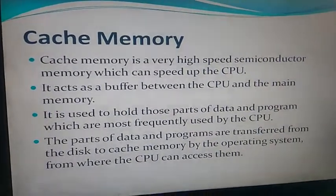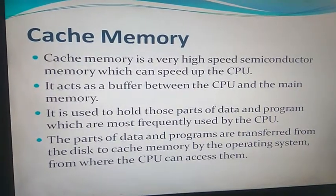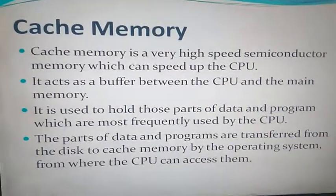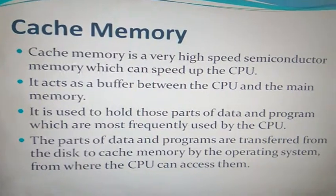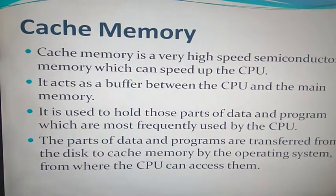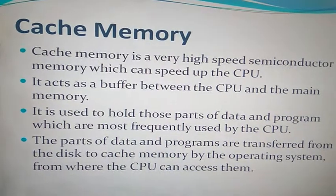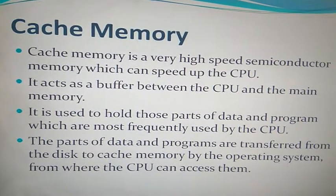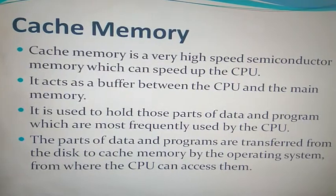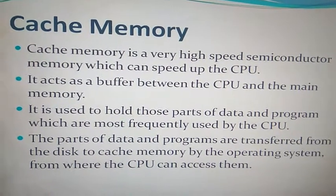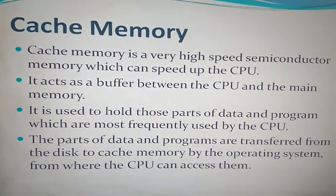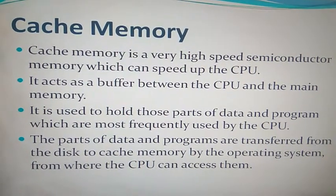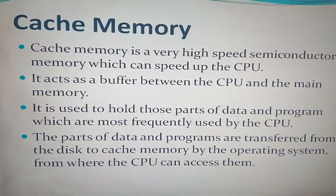Cache memory is a very high speed semiconductor memory which can speed up the CPU. Cache memory is used to speed up CPU performance, so we get results very fast. It acts as a buffer between the CPU and the main memory — buffer means a mediator, something in between the CPU and the main memory, which is the physical memory.